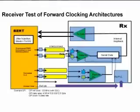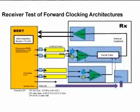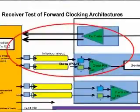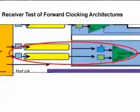Now I want to show you how to test forwarded clock devices with the Jaybird. Here is an example of a forward clocking architecture — in this case, an example of QuickPath Interconnect that can be tested with the Jaybird. As you see here, forwarded clock devices require that not just the data signal is transmitted, but also the clock signal. Usually this is running at half the data rate.